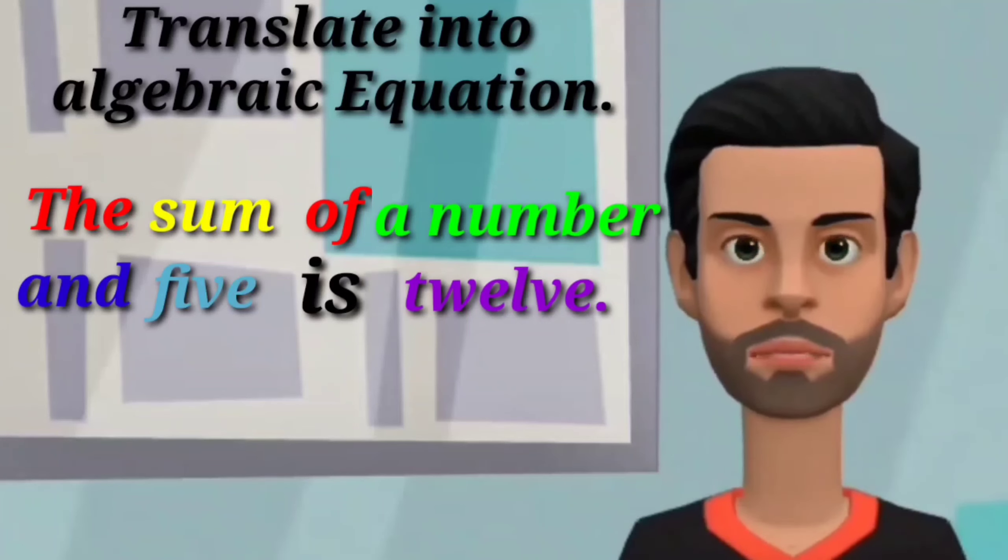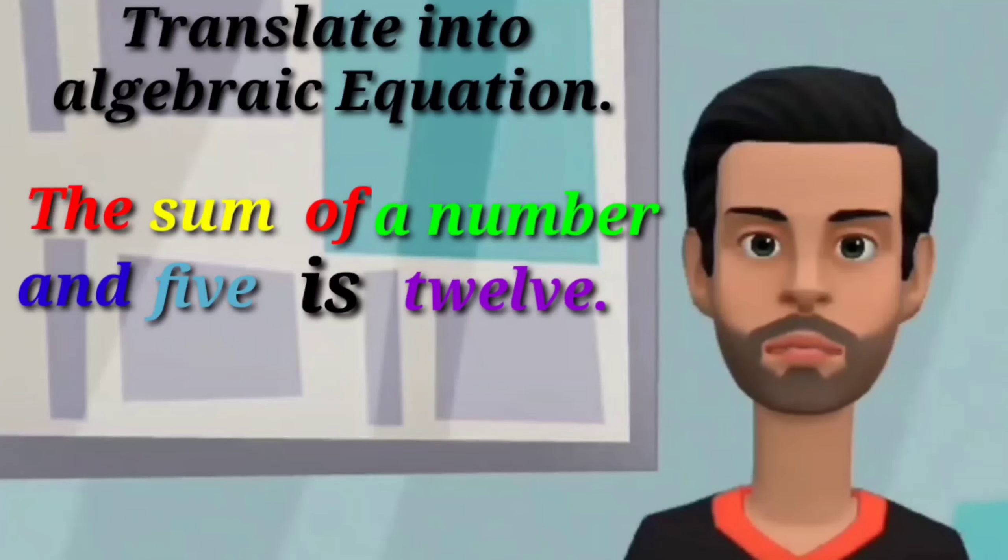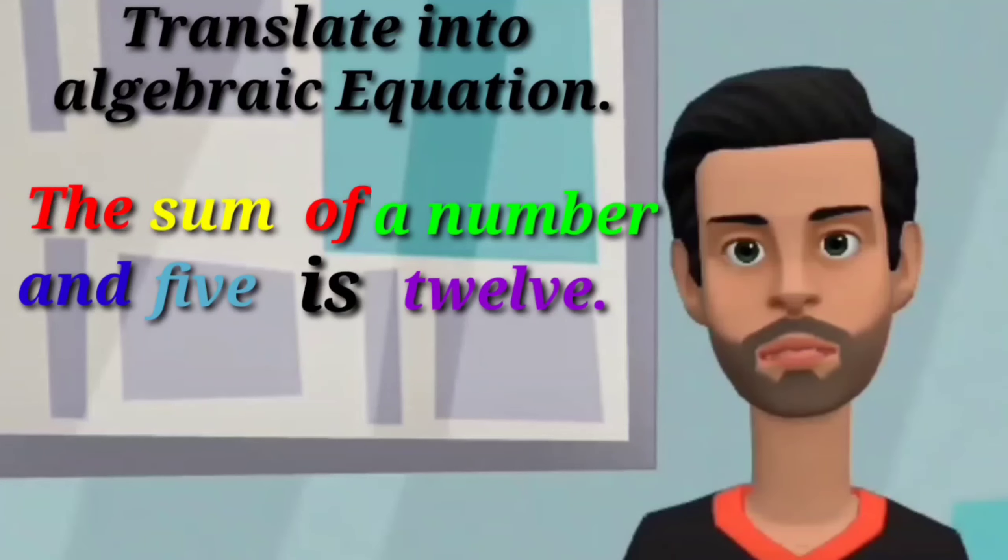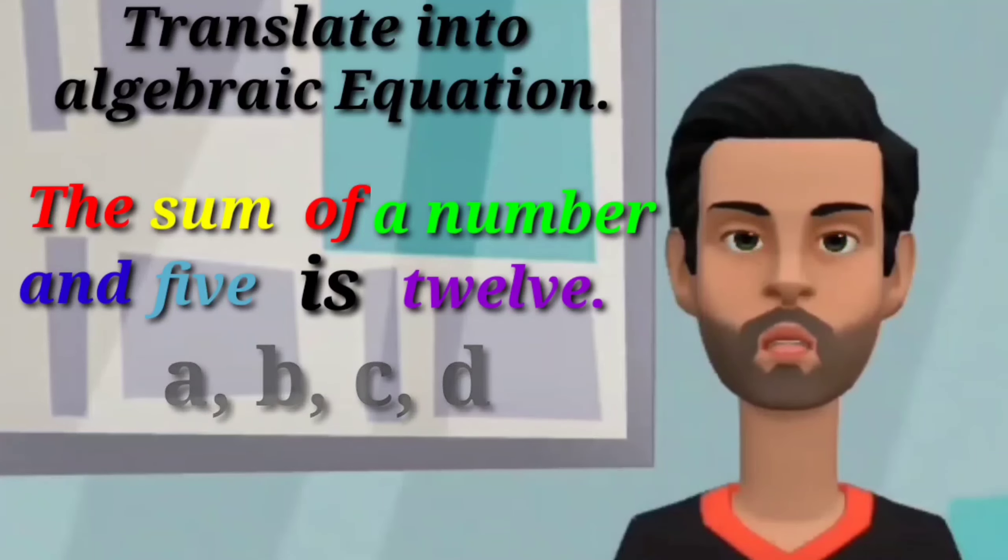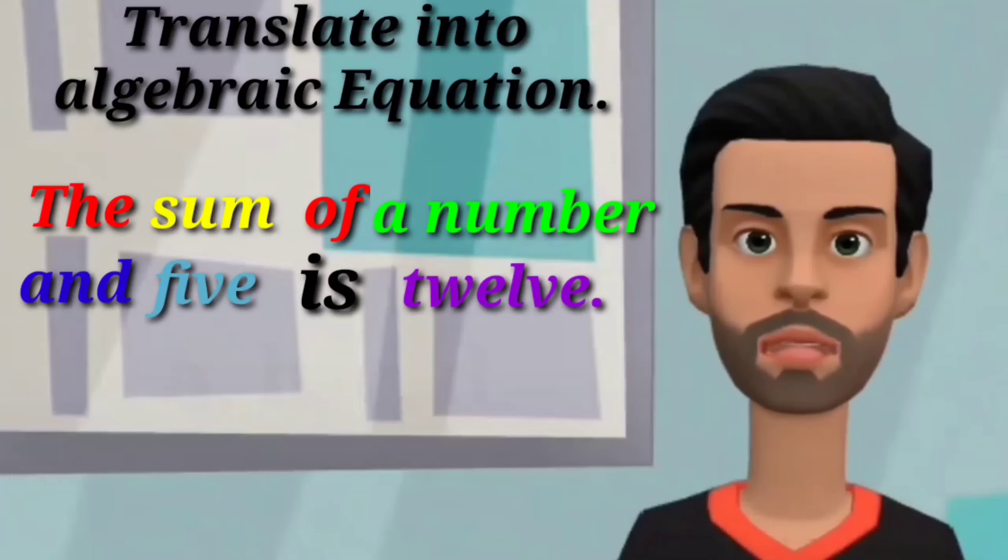The sum of a number and five is twelve. Take note that you can use any letter from the alphabet to represent the value of a number. Example: letter A, letter B, letter C, letter D, etc.